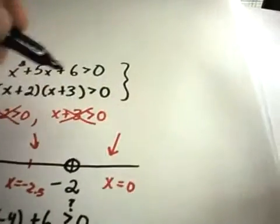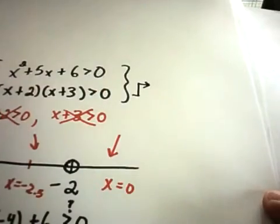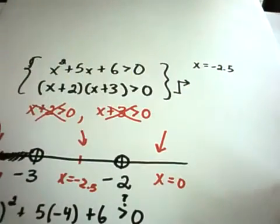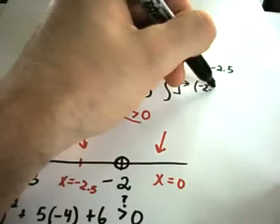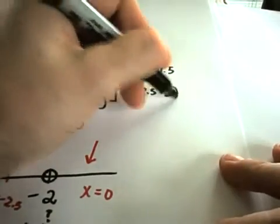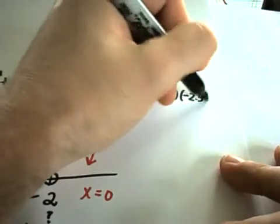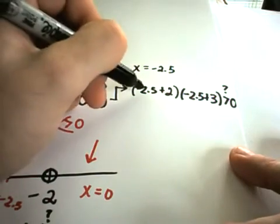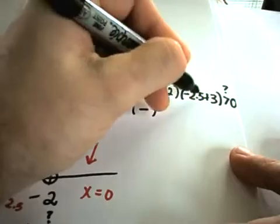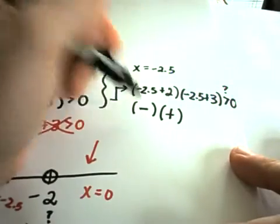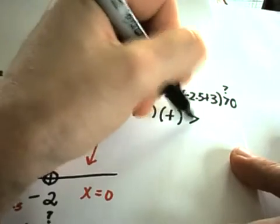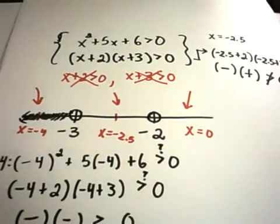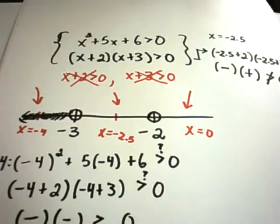For the middle interval, I'll plug in x equals negative 2.5 into the factored form. Negative 2.5 plus 2 is negative, but negative 2.5 plus 3 is positive. A negative times a positive is negative, and that is not greater than 0. So there is no number between negative 3 and negative 2 that will satisfy the inequality.